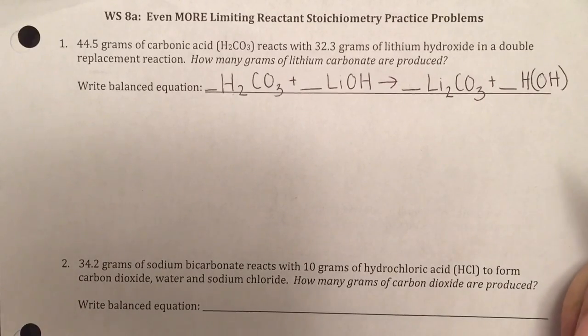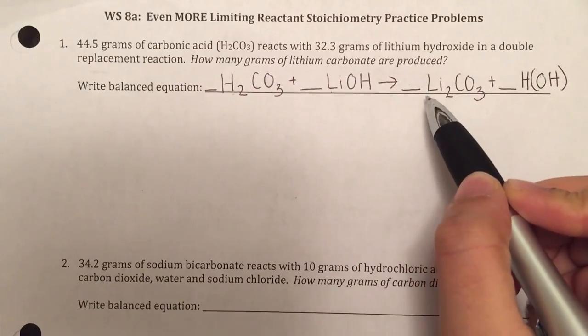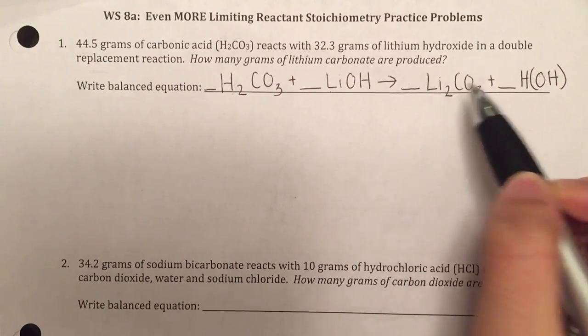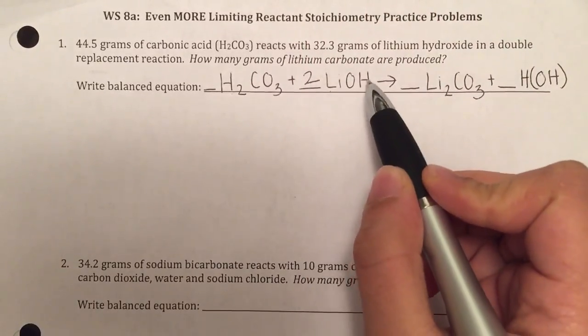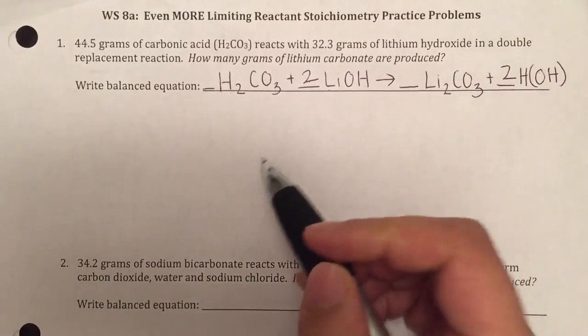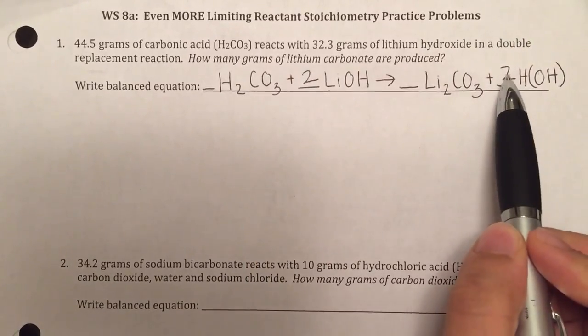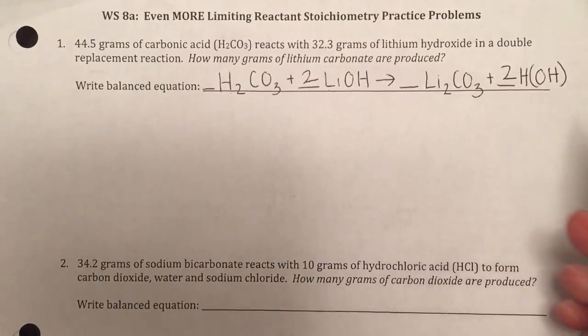If you look at this, you'll first notice that your lithiums are not balanced. There's 2 here, so I'm going to put a 2 here. That leaves me with 2 hydroxide, so I'm going to put a 2 here. Then everything else is balanced. I have the same number of hydrogens, 2 and 2, same number of carbons, and same number of oxygens.